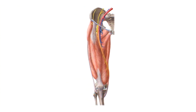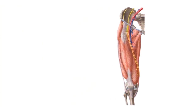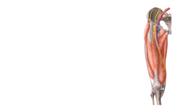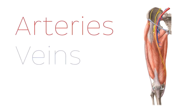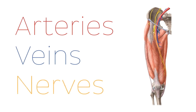In this tutorial we're going to be looking at the hip and thigh from an interior view, as seen in this image, and we're going to be describing the main arteries, veins, and nerves found in the hip and thigh.